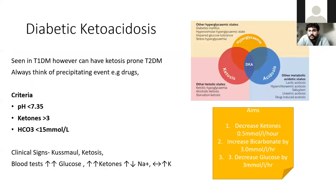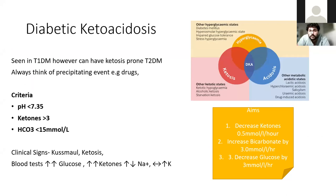In terms of DKA, obviously this is most associated with type 1 diabetes. Around 4% of patients will initially present in DKA from their diabetes. This is one of those things you don't want to miss, because early and effective management is very important for outcomes — particularly in children, where if they're not treated they can develop cerebral edema and possible death.